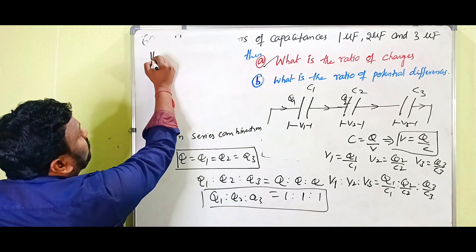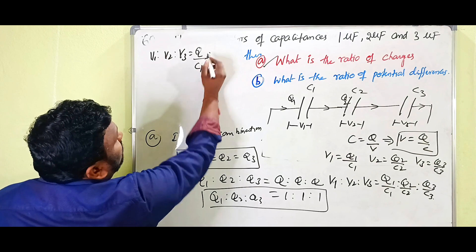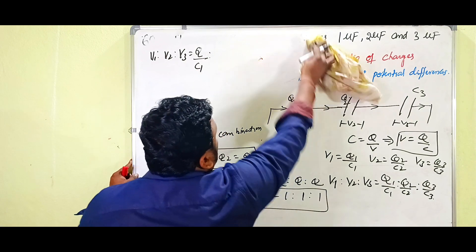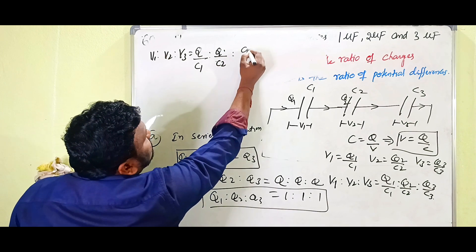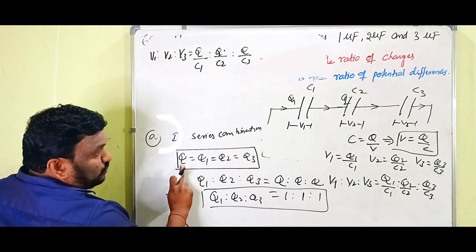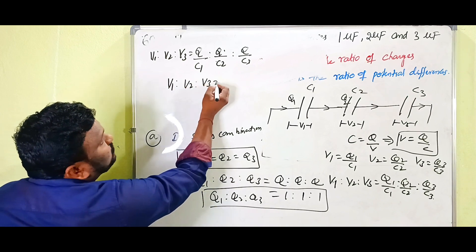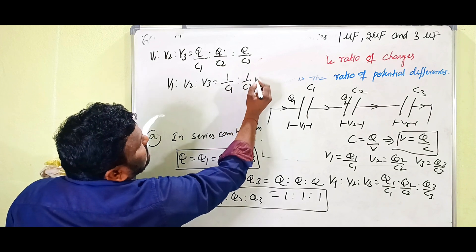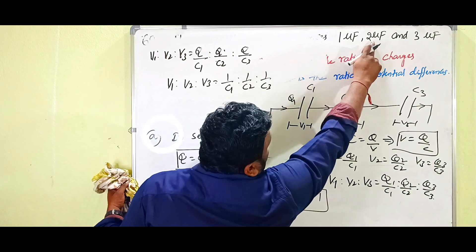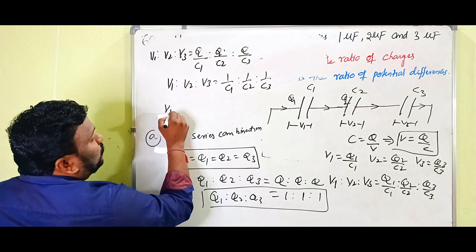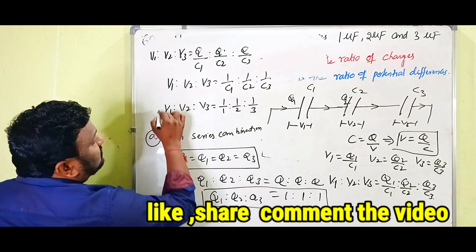So V1 : V2 : V3 = Q/C1 : Q/C2 : Q/C3, which simplifies to 1/C1 : 1/C2 : 1/C3. Substituting the values — C1 = 1 microfarad, C2 = 2 microfarad, C3 = 3 microfarad — we get V1 : V2 : V3 = 1/1 : 1/2 : 1/3. This is the ratio of potential differences in the series combination of capacitors.